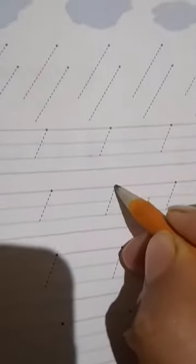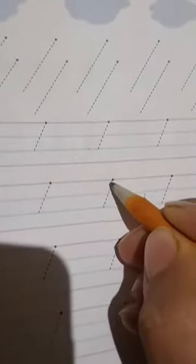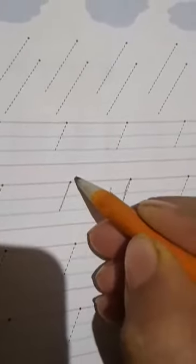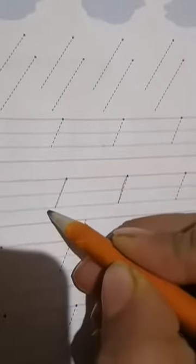Aur mai abhi aapko samjhaungi ki isko hum kaise draw kertate hai. How do we draw these lines? What do we do? Ham ek point ke upar aapna pencil rakhenge and we will drag it down. Ham is line ko niche ki taraf thoda kheechenge. It goes from right to left.